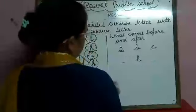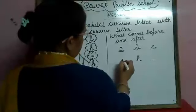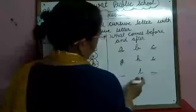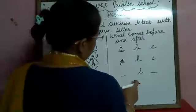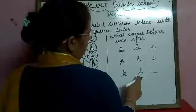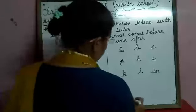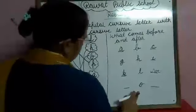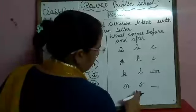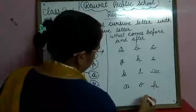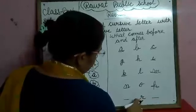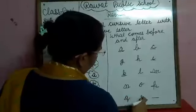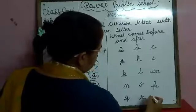H. What comes before H? G. And what comes after H? I. Before O — N. And what comes after O? P. This is small cursive R. What comes before R? Q. And what comes after R? S.